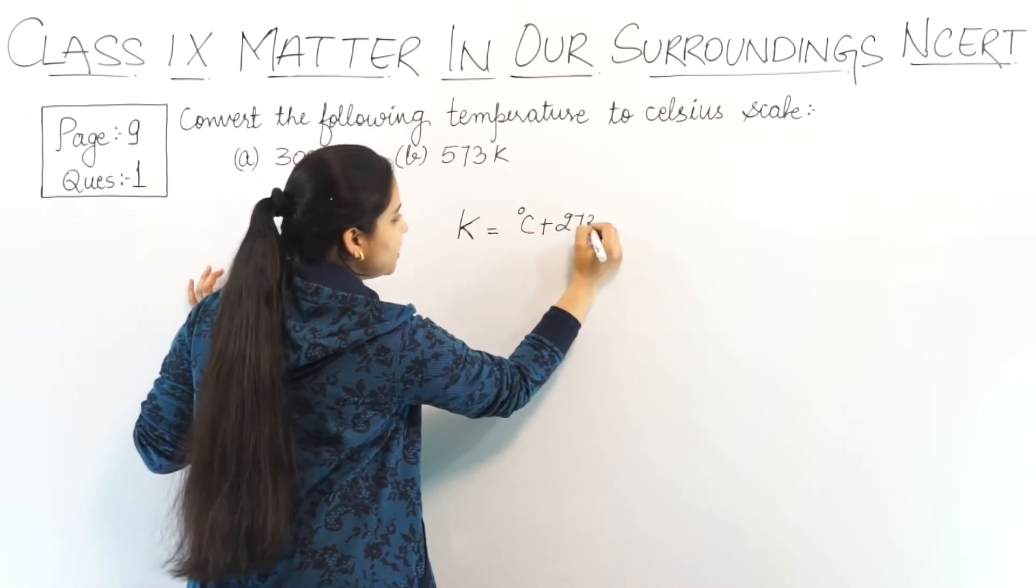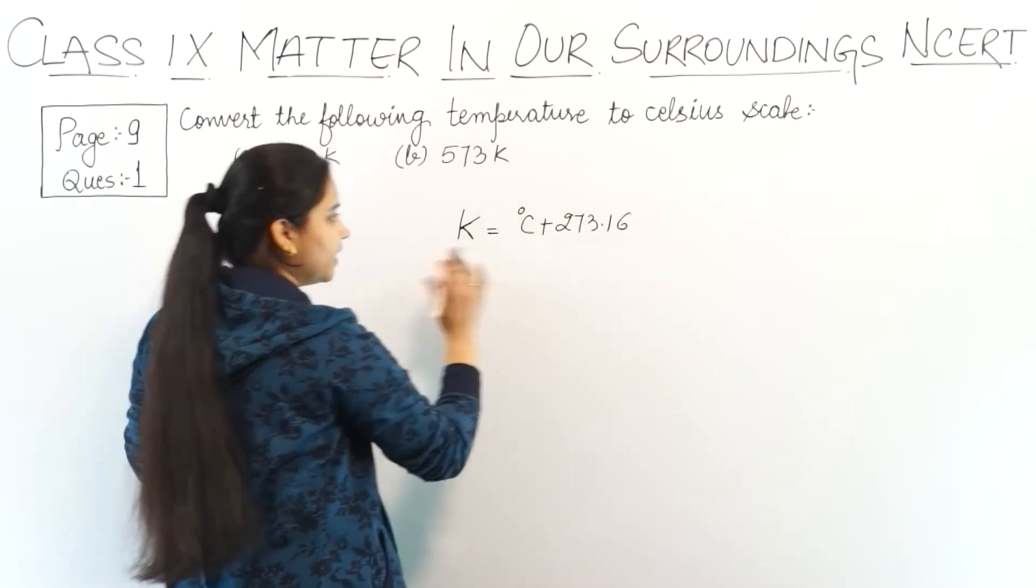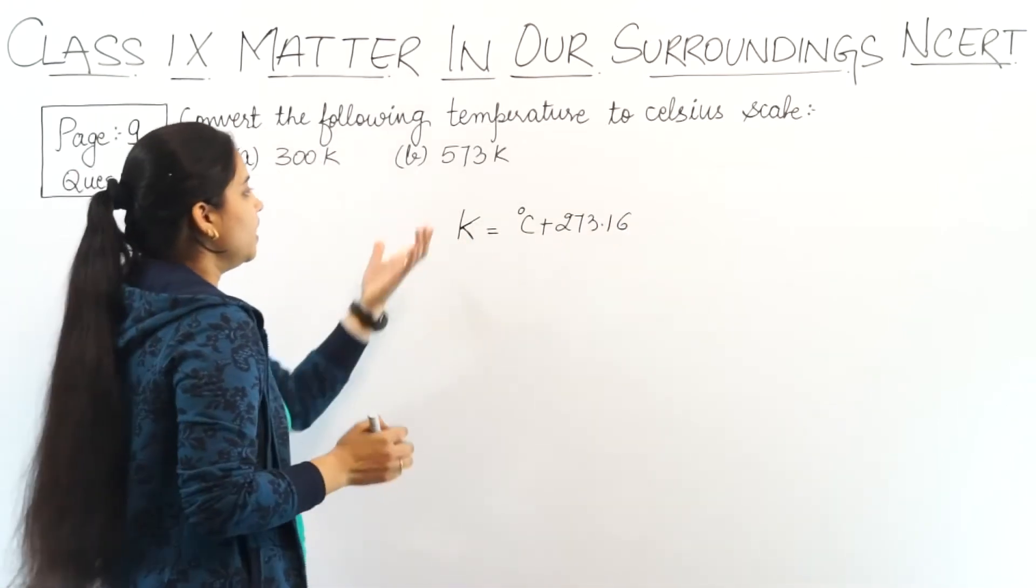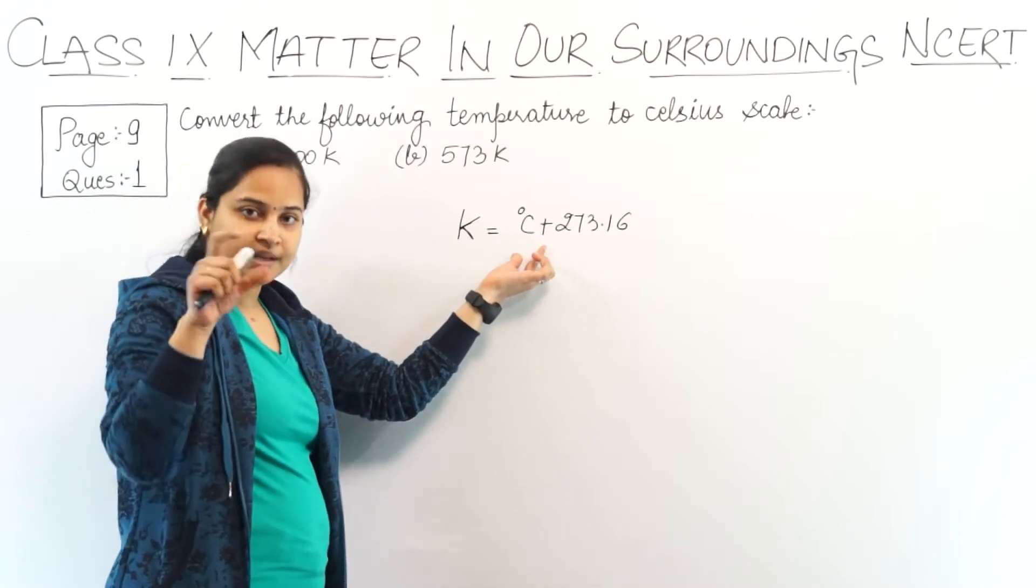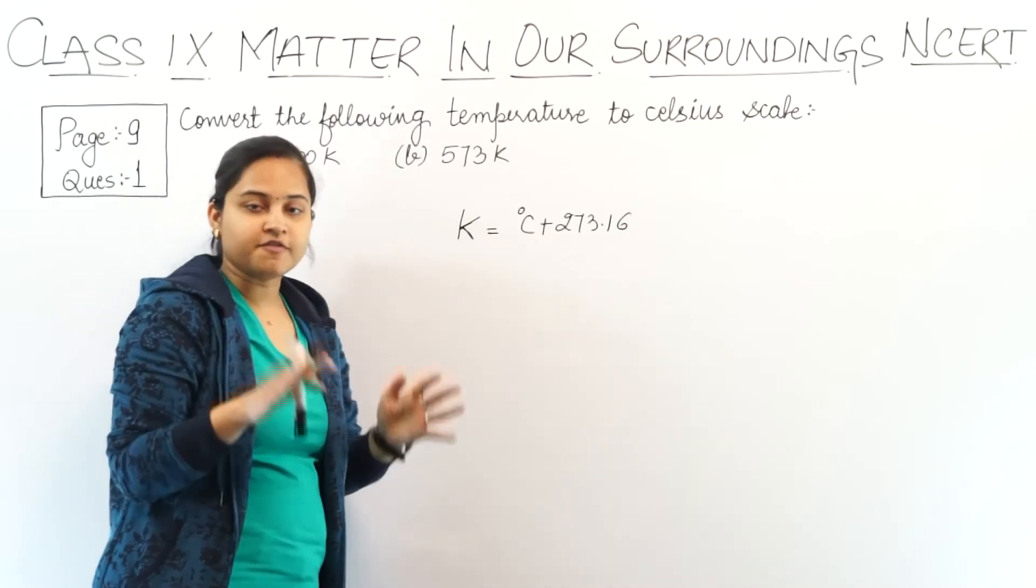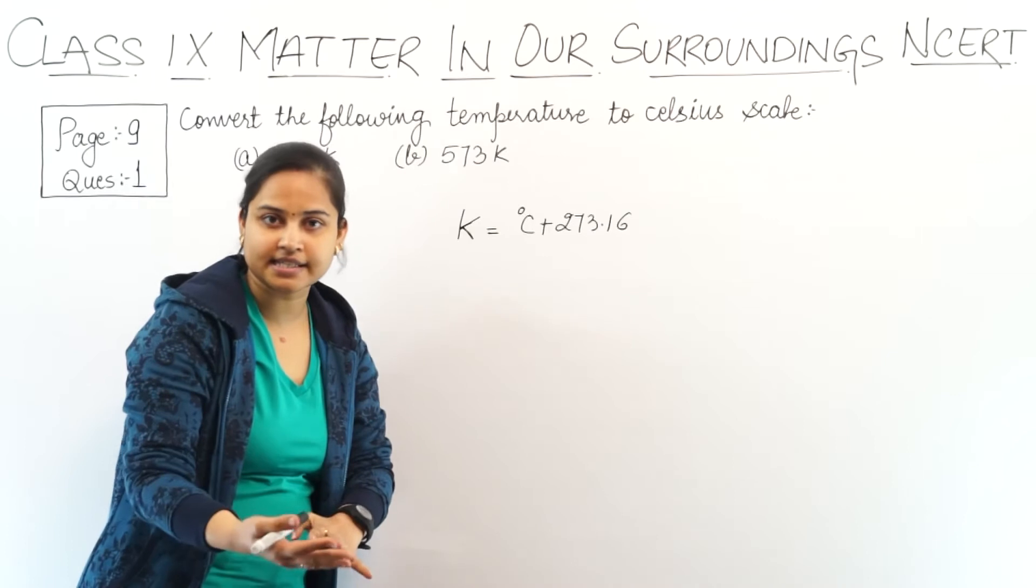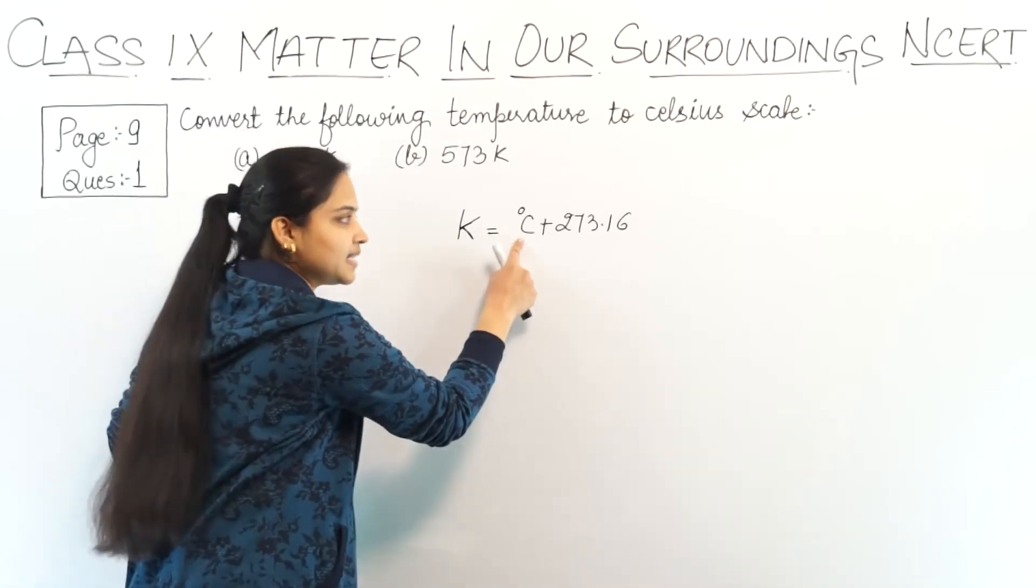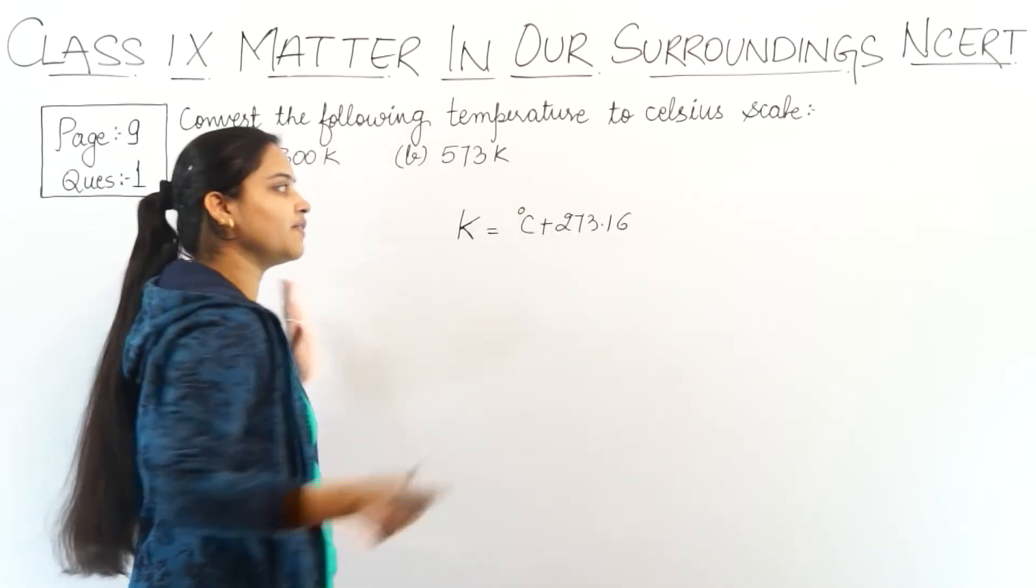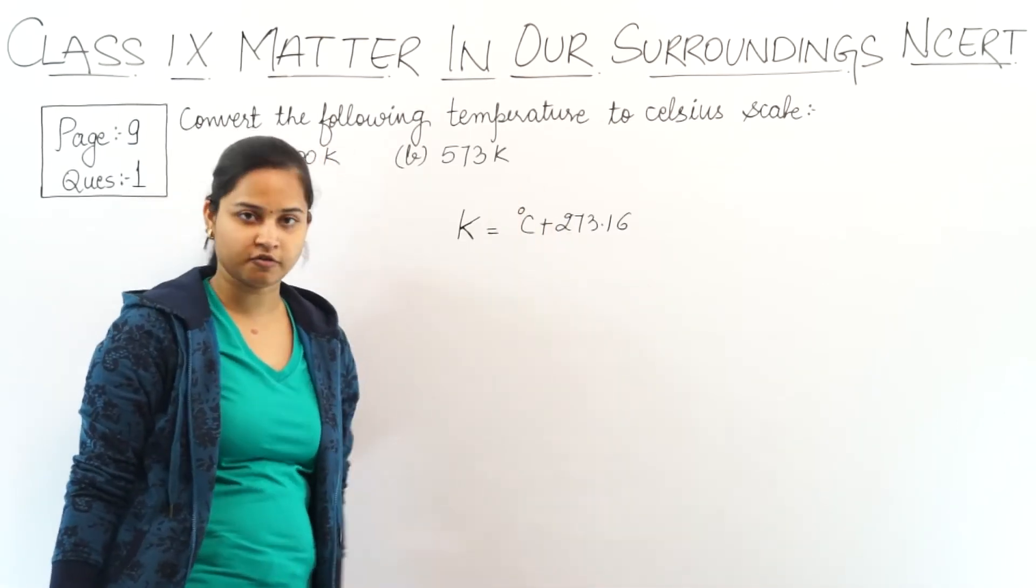So, 273.16 is the general formula. If I have a temperature given in degree Celsius, then to convert to Kelvin, I will add 273.16. It's a general formula.